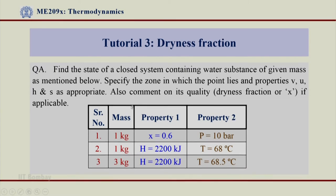Depending on whatever has been given, for example, question number 1 is mass 1 kg, property has been given as x = 0.6 while property 2 has been given as 10 bar. For a given pressure and given dryness fraction find out where this state lies, at the same time find out the properties V, U, H and S at that particular thermodynamic state.